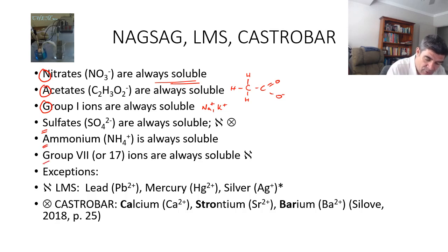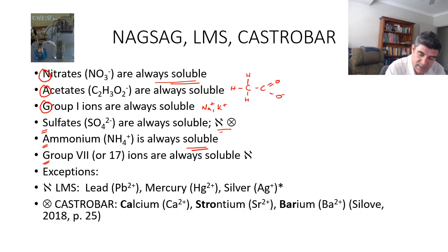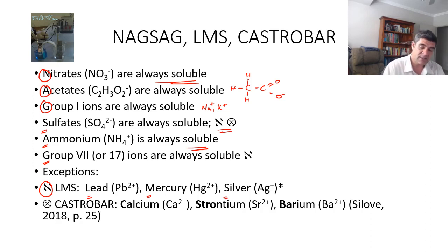Ammonium ions are always soluble — that's a nice easy one. For sulphates and group 7, they are generally soluble but there are some exceptions. The NAGSAG items are the general rules, and our LMS and Castro bar are the exceptions. Looking at sulphates: all sulphates are soluble with two groups of exceptions. The first group is LMS — lead ions, mercury ions, and silver ions. So lead sulphate, silver sulphate, and mercury sulphate are all insoluble and would form a precipitate.